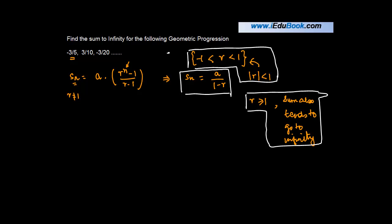Now if we come back to the case at hand, the value of a in this case is minus 3 upon 5. And let's see what's the value of r.